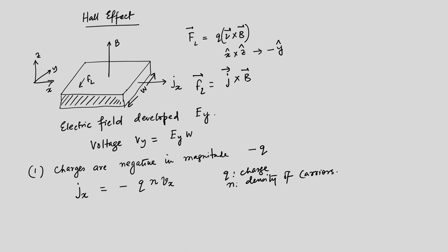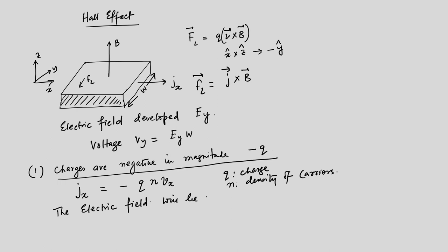When the charges are negative — case one — the electric field that develops will be in the minus y-direction, and so the Hall voltage will be negative.